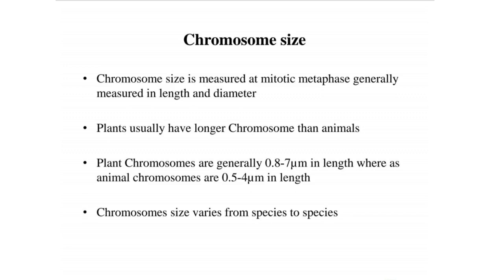Chromosome size is measured at mitotic metaphase, generally measured in length and diameter. Plants usually have longer chromosomes than animals. Plant chromosomes are generally 0.8 to 7 micrometers in length, whereas animal chromosomes are 0.5 to 4 micrometers in length.